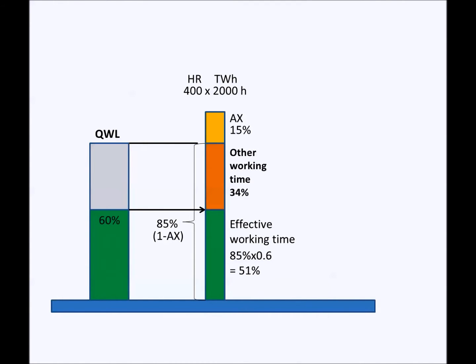Auto working time can now be calculated and it is 34%. This auto working time includes work planning, quality assurance, reporting, wasted working time and fuss due to poor motivation.